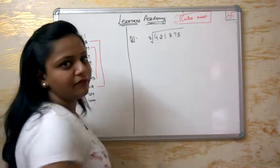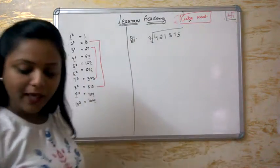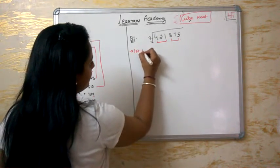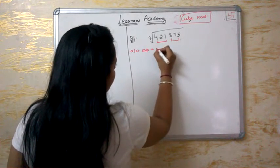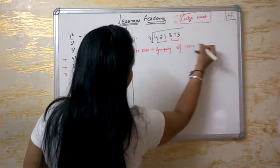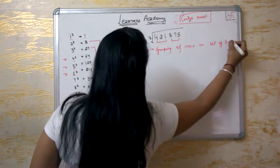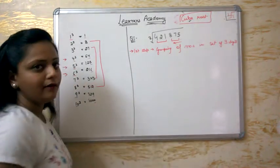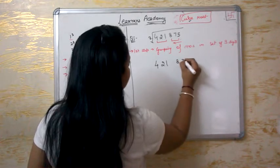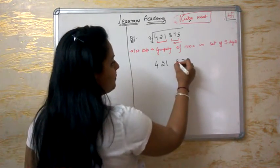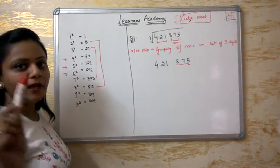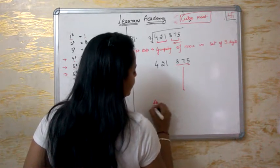The number is 421875. So my first step for finding cube root through Vedic math will be grouping of numbers in sets of 3 digits. Now, this is my particular group — the last digit is 5. So definitely, if I look at 5, the only cube ending in 5 is 5 cubed = 125. So this is my answer — the unit place will be 5.